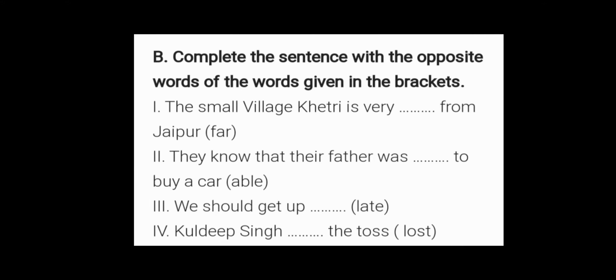Second question: complete the sentences with the opposite words of the words given in the brackets. Now children, here 4 blanks are there and you can see at the end 4 words are written in the brackets — far, able, late, and lost — and the answers will be the opposites, the antonyms of these bracket words. So do that.